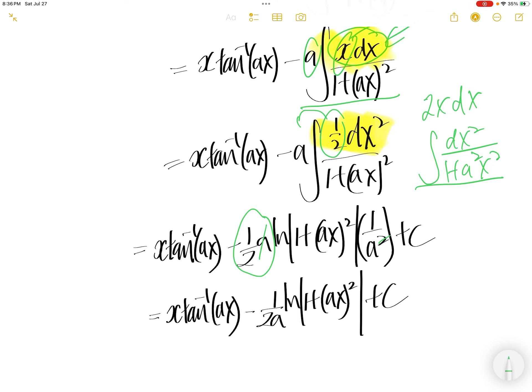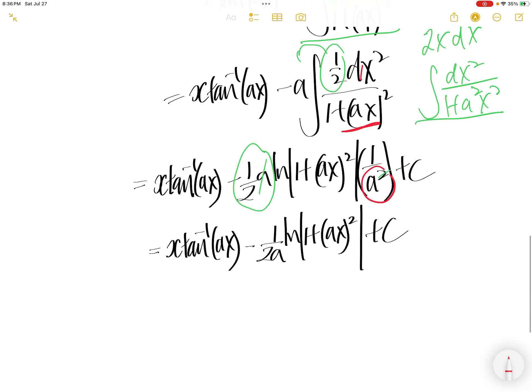Okay. The integral of this is ln absolute 1 plus Ax square. And the coefficient in front of the x square is 1. The coefficient in front of x square over downstairs is A square, so you have to divide by A square for correction. One of the A downstairs cancel with the A here. You get 1 over 2A now, ln absolute 1 plus Ax square plus C.